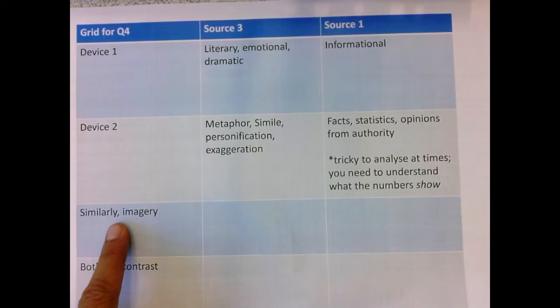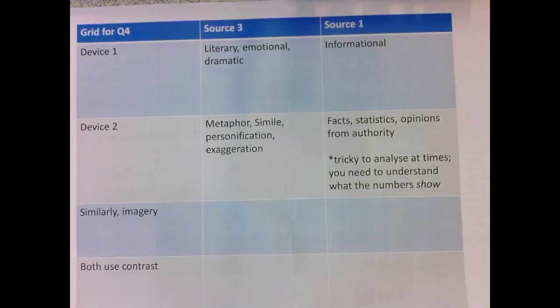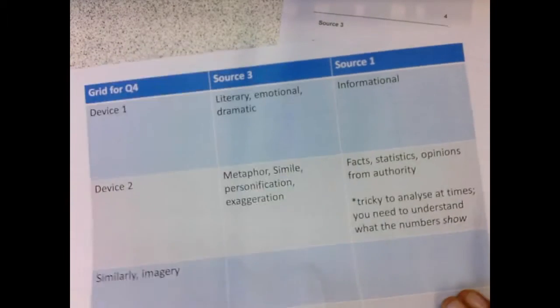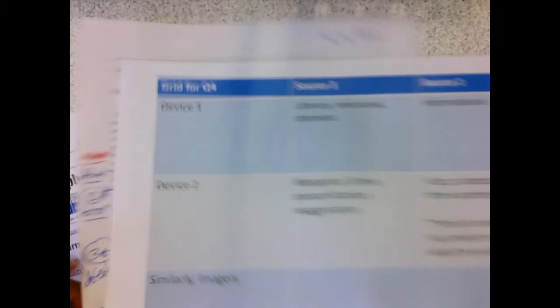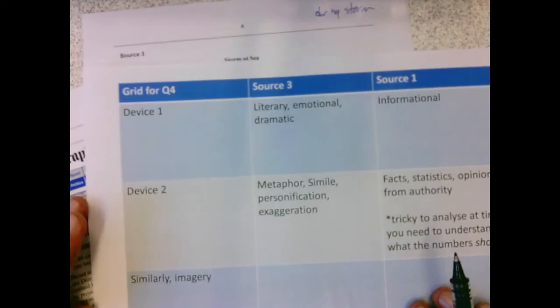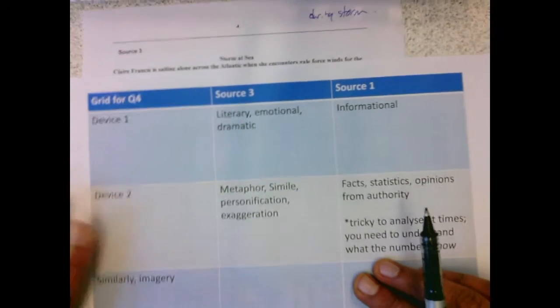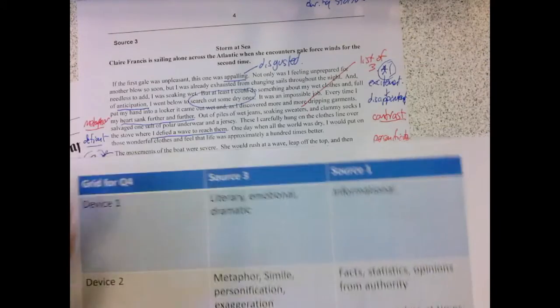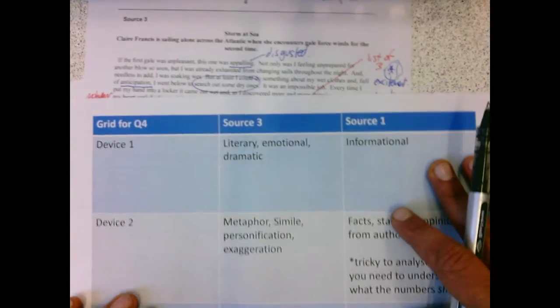Further, we're not just comparing. We want to have similarities, like we have imagery, and we want contrast as well. So really, right now, I'm just going to fill out this grid really quickly to see how we can do this. And of course, on the exam, you're going to need to create this grid yourself, and you're going to need to do it really quickly because you've got to start writing fast.